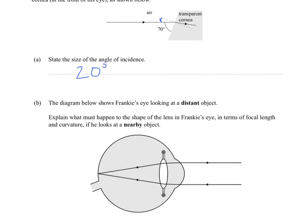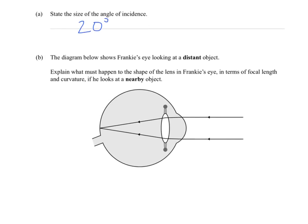Part B. The diagram below shows Frankie's eye looking at a distant object. Explain what must happen to the shape of the lens in Frankie's eye in terms of focal length and curvature. We've got to talk about focal length and curvature if he looks at a nearby object. Rather than a distant object, we're shifting to a nearby object, which means the light rays are going to have to come in on more of an angle like this. If that's the case, that's going to focus the light rays further back because they're coming from a sharper angle and they'll have less time to bend around to hit on the light-sensitive part of the back of the eye, the retina.